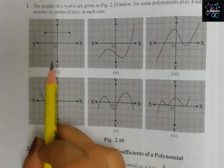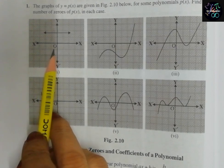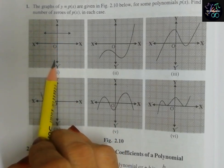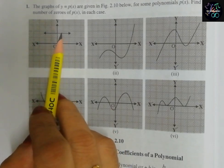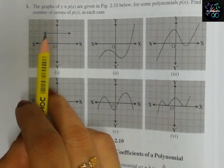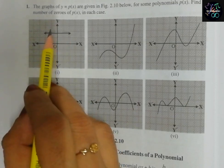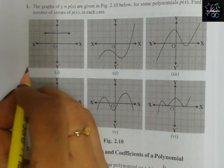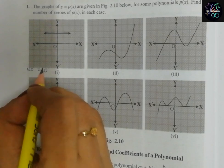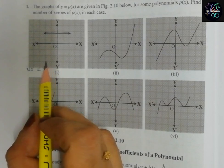In the first graph, we can see the x-axis and y-axis. We have to check whether the graph intersects the x-axis and at how many points. We can see that this graphical line is not intersecting the x-axis at any point. So the number of zeros is zero.